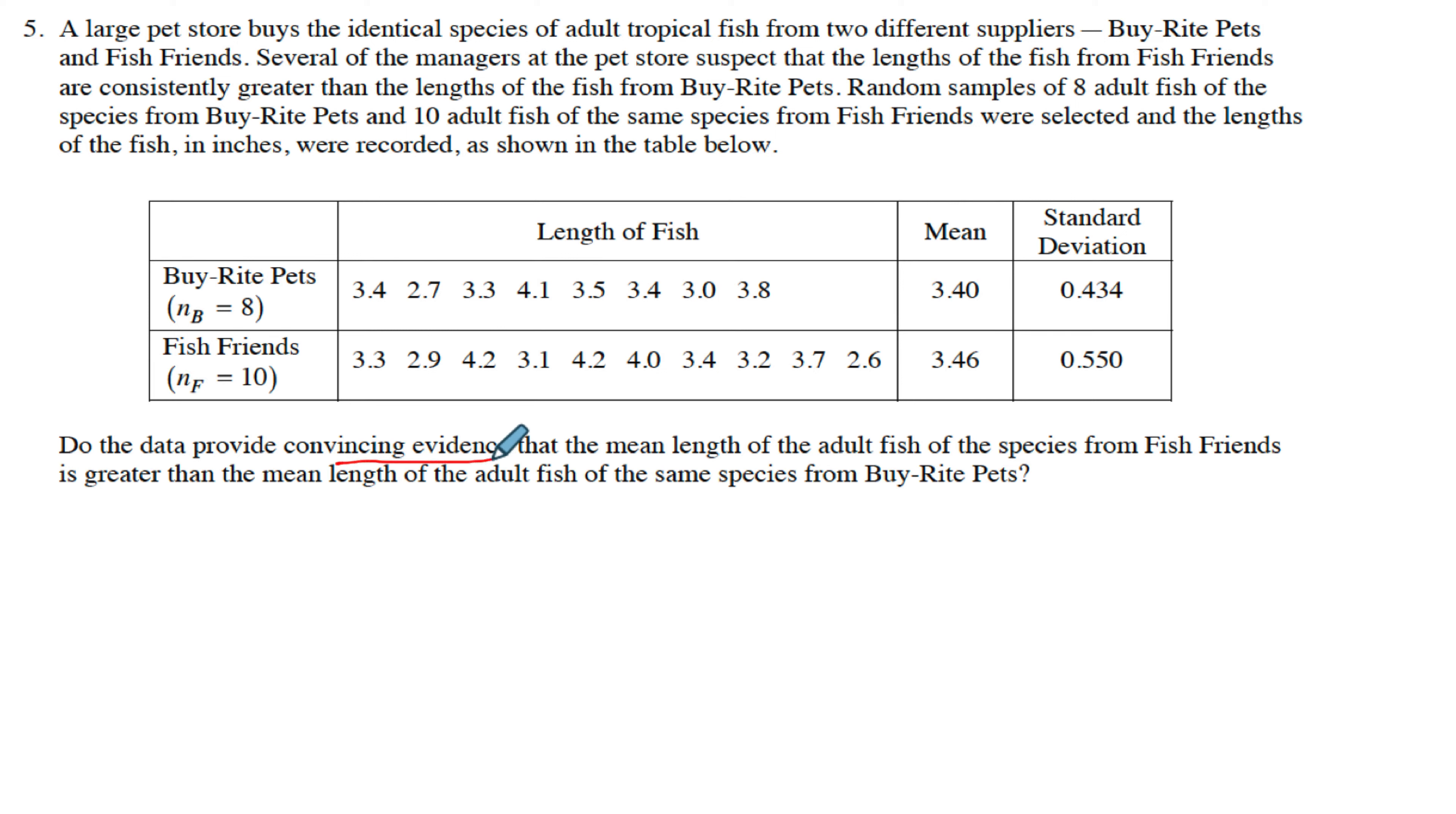You want to see if one fish—do the data provide convincing evidence that the mean length of the adult fish from Fish Friends is greater than the mean from Buy Rite? Obviously, we look at our samples. You have a greater mean, but what is the likelihood? Do we have evidence that this store will give you larger fish than this store? Obviously, we have to do a significance test.